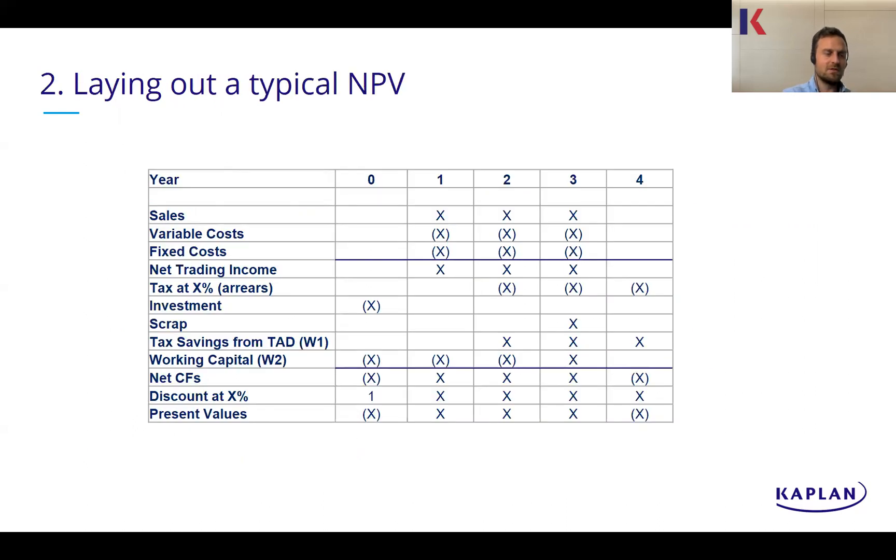As I said at the start, the second thing I want to do here is look at laying out a typical NPV. Now, this isn't going to be suitable for every single NPV question that's out there across all the different qualifications, but it's a good start. It's a nice starting point to try to give us something to work with. Now, this is actually a three-year NPV. Although I've gone up to year four, it's actually only three years. That fourth year is because I've done tax in arrears in this question. But all that means is that your tax, you're paying tax the year after. So that column there is purely for tax.